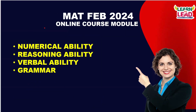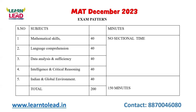The strategy is: across the four sections — mathematical skills, language comprehension, data analysis and sufficiency, and intelligence and critical reasoning — you need to attempt 160 questions in 150 minutes. Note that the Indian and global environment section's marks are not considered in your scaled score, so it is not advisable to omit it completely; try to attempt a few questions you know. For mathematical skills, 40 questions are asked, and to attempt 30-plus you need solid practice.